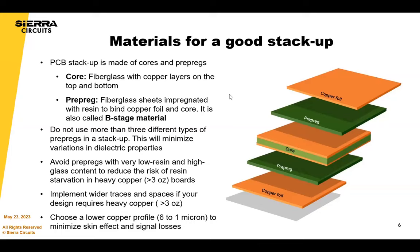Stack-ups are also made out of prepregs, which are B-stage material — B-stage fiberglass with resin. B-stage melts during the lamination process, which glues all the copper layers together. In that melting process, materials move around and shift, which causes a registration issue. To avoid registration issues, we scale the images of each individual layer, and how we build the board completely plays a role into how we scale it and our build strategy.